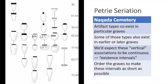The principles behind the kind of incidence seriation that Petrie was doing at the Nagata cemetery are as follows. Certain artifact types coexist in particular graves, and some of those types also exist in earlier or later graves. We might call these chronological associations existence intervals — represented by vertical line segments in the figure — intervals of time within which we'd expect that artifact type to be in use. We'd also expect that use to be continuous: a type should not appear, then disappear, and then reappear, but appear, hang around for a while, and then disappear forever.